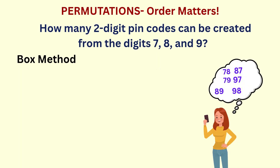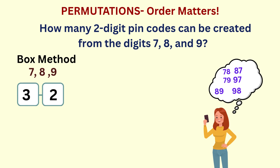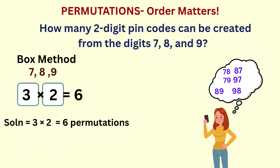Again, we can use either the box method or a formula to determine the number of two-digit PINs that Beth can create from the three digits 7, 8, and 9. In the box method, we use two boxes for the two-digit PIN. The first box has three choices: 7, 8, or 9. Once a digit goes into the first box, the second box has two remaining choices. Multiplying the values gives the total number of PIN codes: 3 times 2 equals 6. So six unique PIN codes can be created, and we can use all six since the order for each is different.